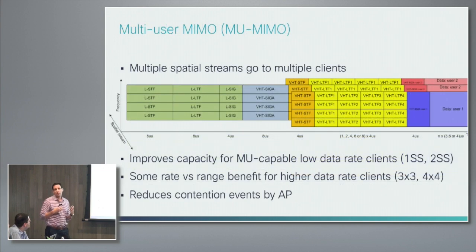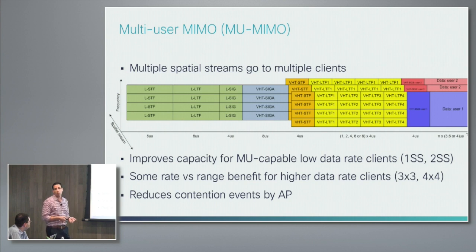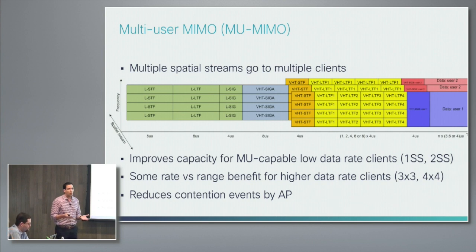Moving to multi-user MIMO — the 11n and 11ac single-user MIMO stuff is great for increasing throughput to single clients. With 11ac you start getting clients getting a gig wireless, which is great, but you still have a lot of lower data rate clients out there — single spatial stream, one and two antenna clients — and they are a big part of what's in the mix in any sort of deployment. So they end up bringing down the overall capacity.